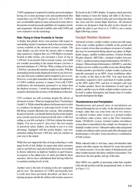Cockpit weather systems: advanced avionics cockpit weather systems provide many of the same weather products available on the ground, and have a variety of uses that can enhance awareness of weather that may be encountered during almost any phase of flight. Radar images, satellite weather pictures, aviation routine weather reports (METARs), terminal weather forecasts (TAFs), significant meteorological information (SIGMETs), Airman's meteorological information (AIRMETs), and other products are now readily accessible at any time during flight.